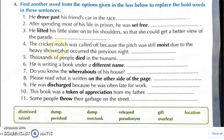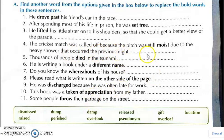Fourth question: the cricket match was called off because the pitch was still moist due to the heavy snowfall that occurred the previous night. The fourth answer is damp.